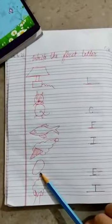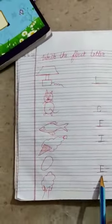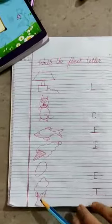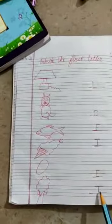Egg. Egg starts with the letter E. Tree. Tree starts with the letter T.